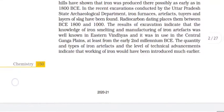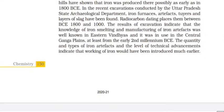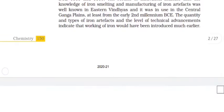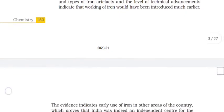The results of excavation indicate that the knowledge of iron smelting and manufacturing of iron artifacts was well known in eastern Vindhyas and it was in use in the central Ganga plains. At least from the early second millennium BCE, the quantity and types of iron artifacts and the level of technical advancements indicate that working of iron would have been introduced much earlier.